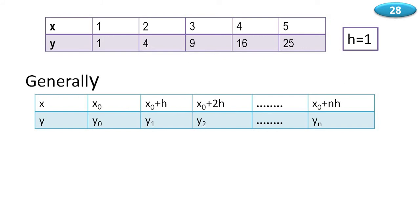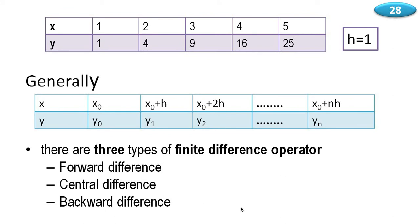Generalizing, we can write the first point as x naught with corresponding y naught, then x1, y1, x2, y2, etc. Since they are equally spaced, x1 = x₀ + h, x2 = x₀ + 2h, and in general xn = x₀ + nh.